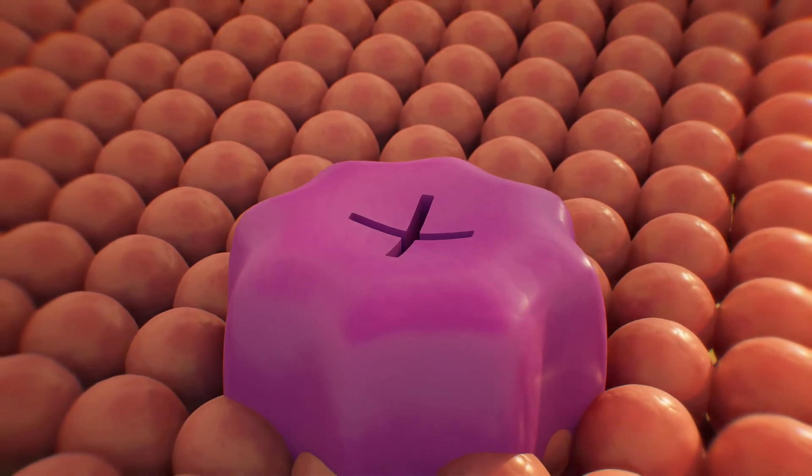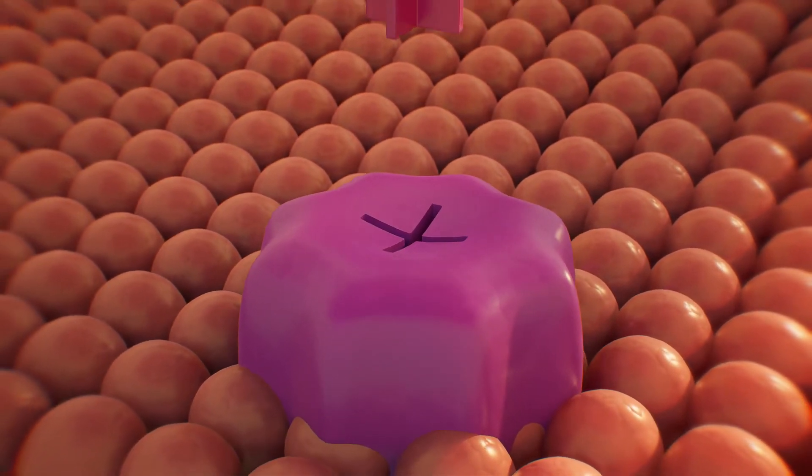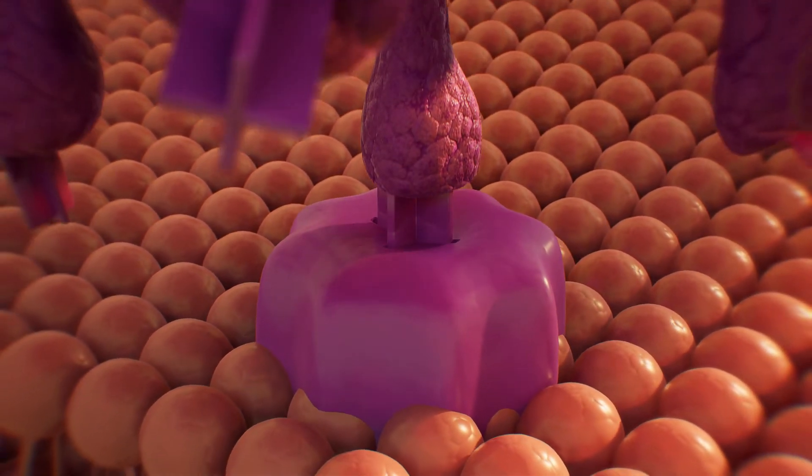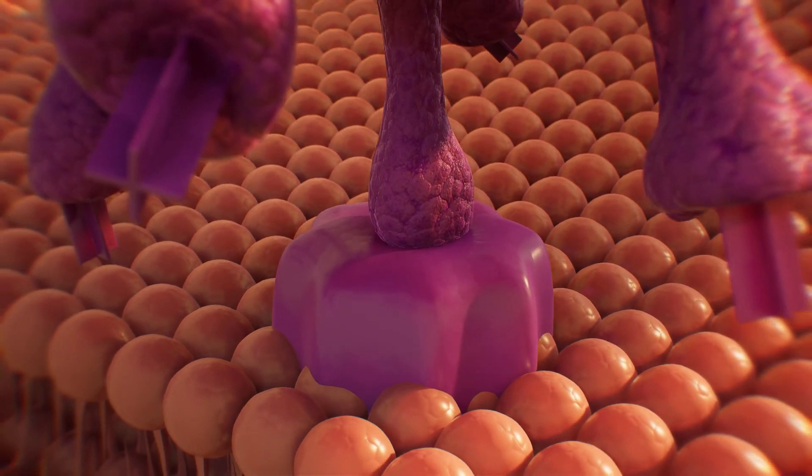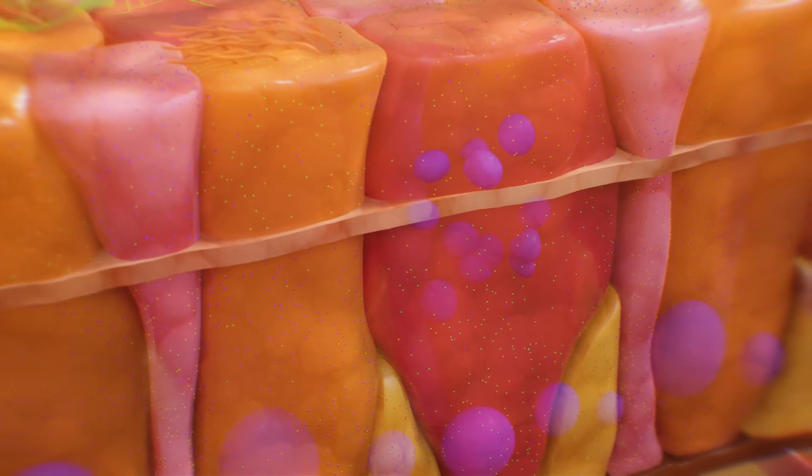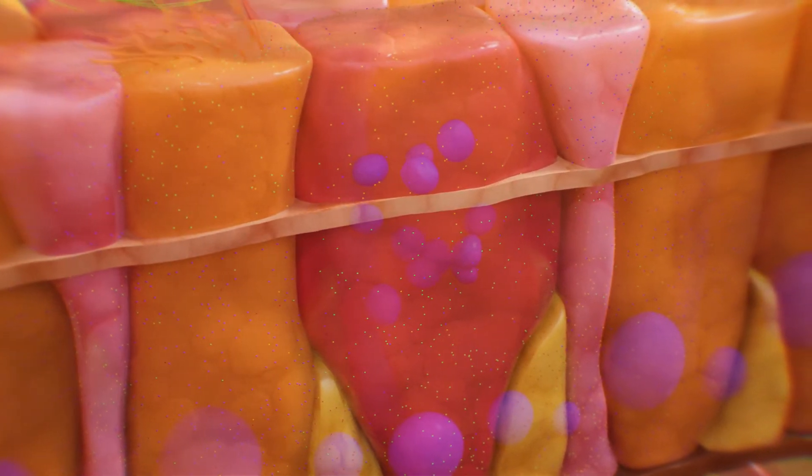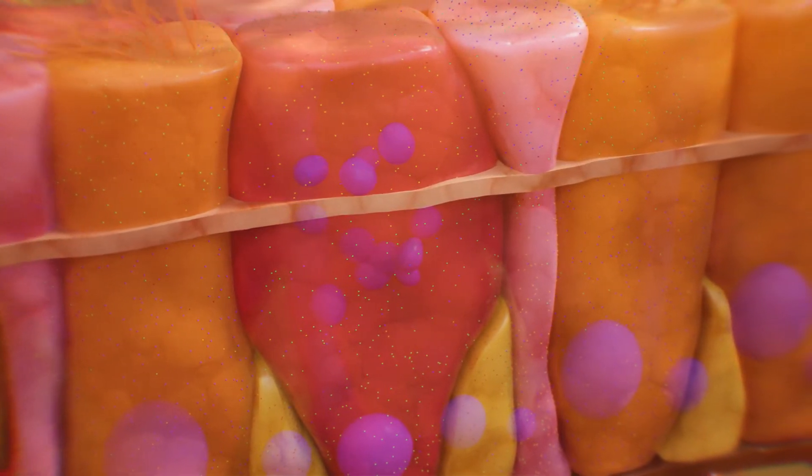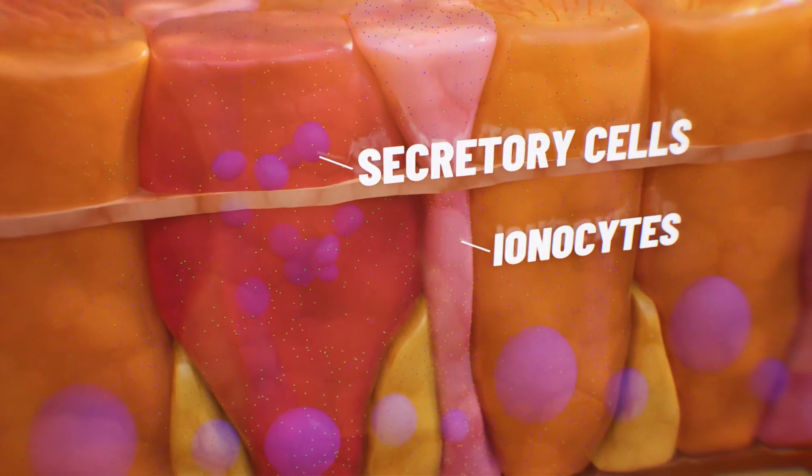Each cell type features distinct receptors on its surface, allowing us to target just the right cells for a given therapy. Messenger RNA and gene transfer therapies should be delivered only to cells that naturally express CFTR protein, like secretory cells and ionocytes.